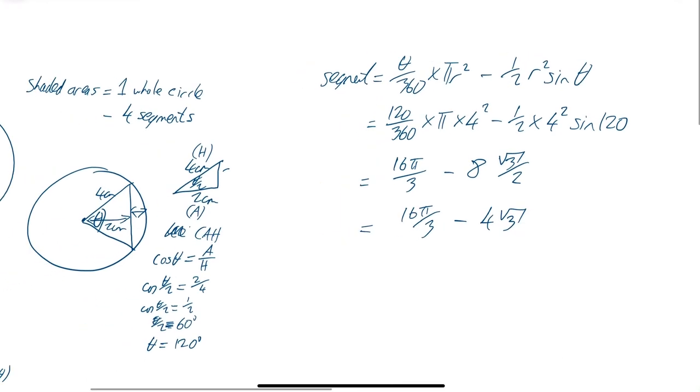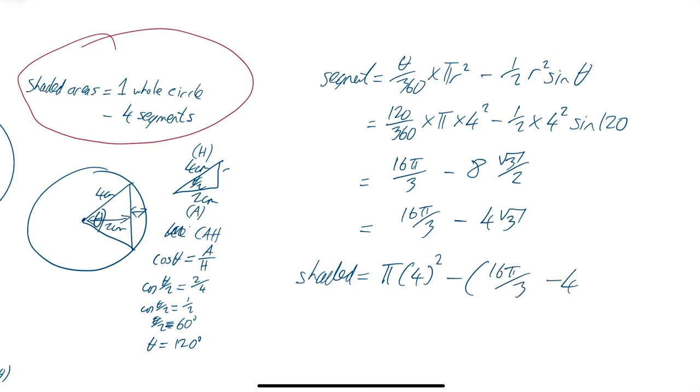And then the whole thing, going back to this formula, the shaded area is one whole circle. So the shaded area is one whole circle, which is going to be pi times r squared, so pi times 4 squared minus what I've just worked out, 16 pi over 3 minus 4 root 3, which is going to be 16 pi. There were 4 of those, weren't there? Minus 4 lots of those. So that's going to be minus 64 pi over 3, and then plus 16 root 3.